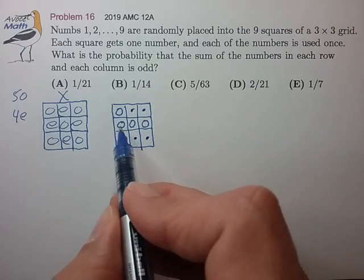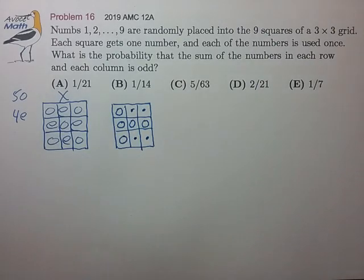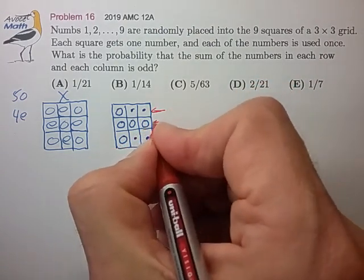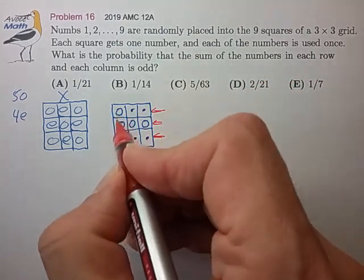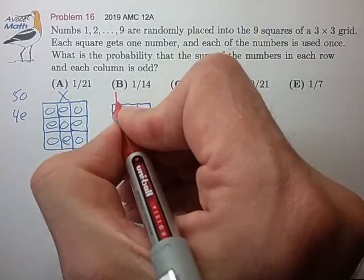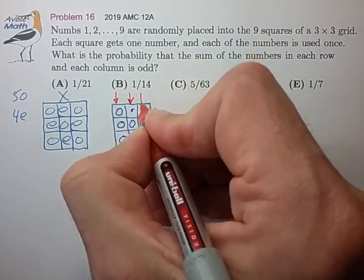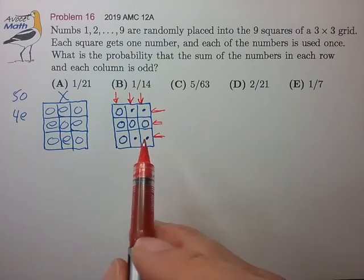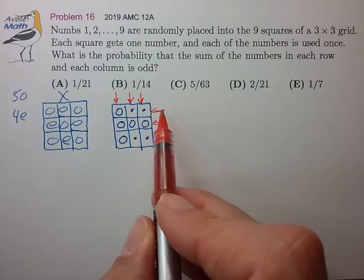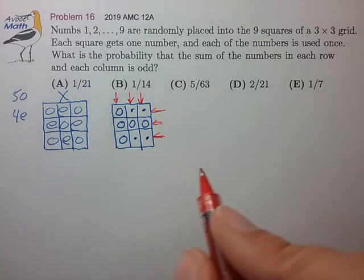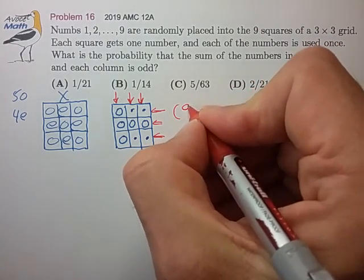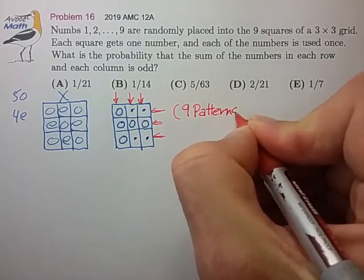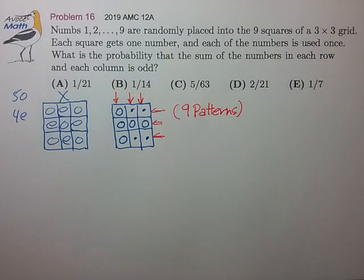It looks like we could have chosen this row of odd numbers to be any of these three rows, and this column of odd numbers could have been any of these three columns. So to set the pattern, we basically have a choice of three columns and three rows — independent choices. So all totaled, we have nine patterns of odd placements to work with.